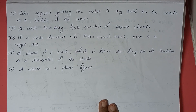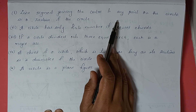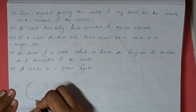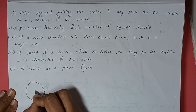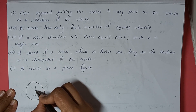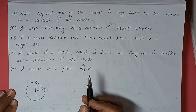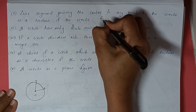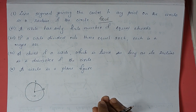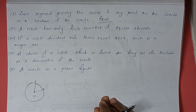Second section: write true or false and give a reason. First: the line segment joining the center to any point on the circle is a radius of the circle. Taking a circle with center O, any point like OP or OQ — both are the radius of the circle. This statement is true. Reason: all points on the circle are equidistant from the center, which is the definition of radius.